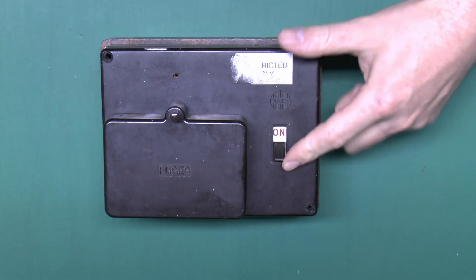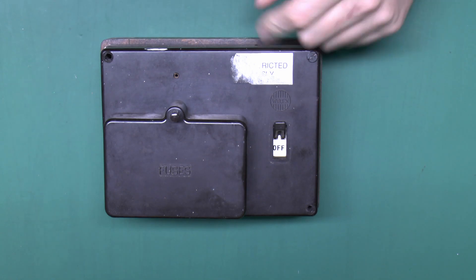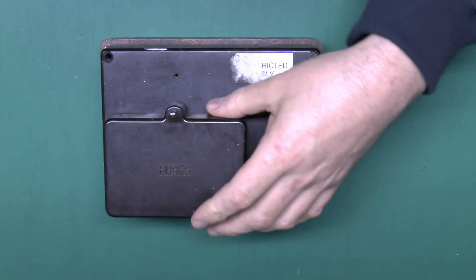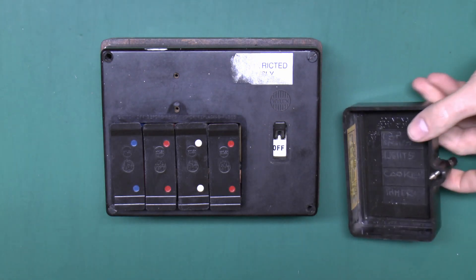So the first thing to do is to switch off the fuse box and then just remove this cover to reveal the fuses.